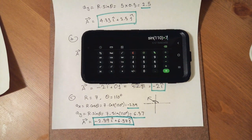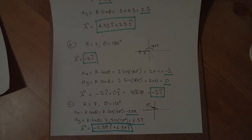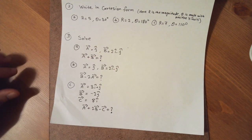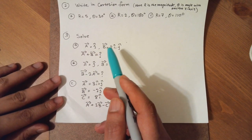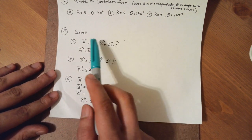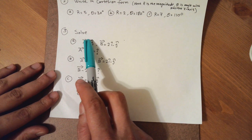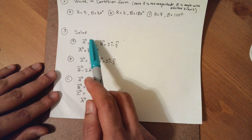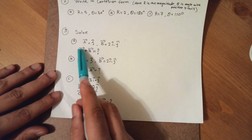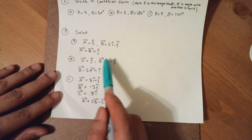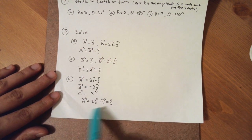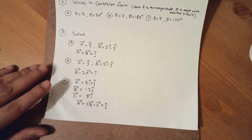On to the next problem set. This problem involves addition and subtraction of vectors. You have been given vectors A and B. For part a, A and B are given — find A plus B. For part b, find B minus 2A. For part c, A, B, and C are given — find A plus 2B minus C.